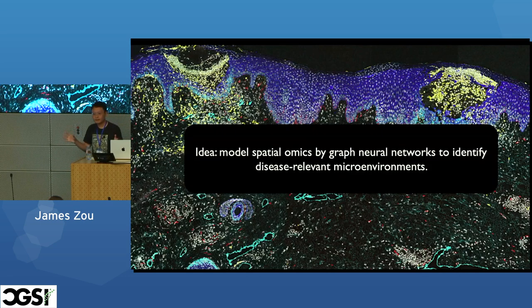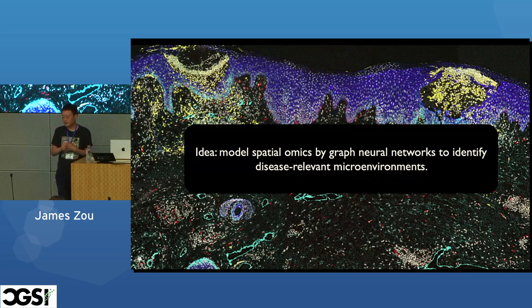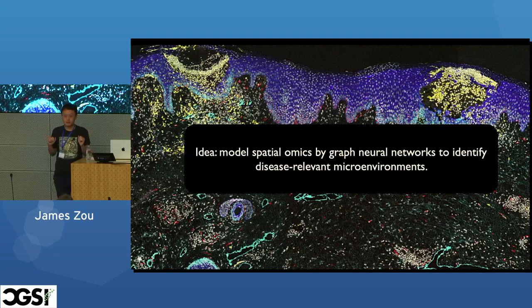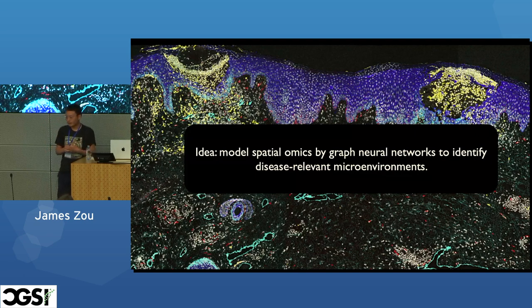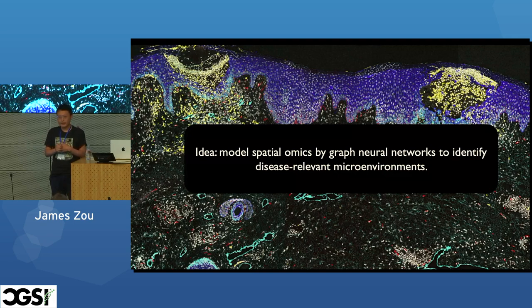On the computational side, we're interested in developing a framework for modeling this very rich spatial data. The kind of data we're generating now includes extremely rich data with many different channels corresponding to different proteins. The idea is to think about how we model this kind of rich spatial data using particular kinds of graph neural networks — and in particular, using these networks to extract and identify relevant microenvironments.